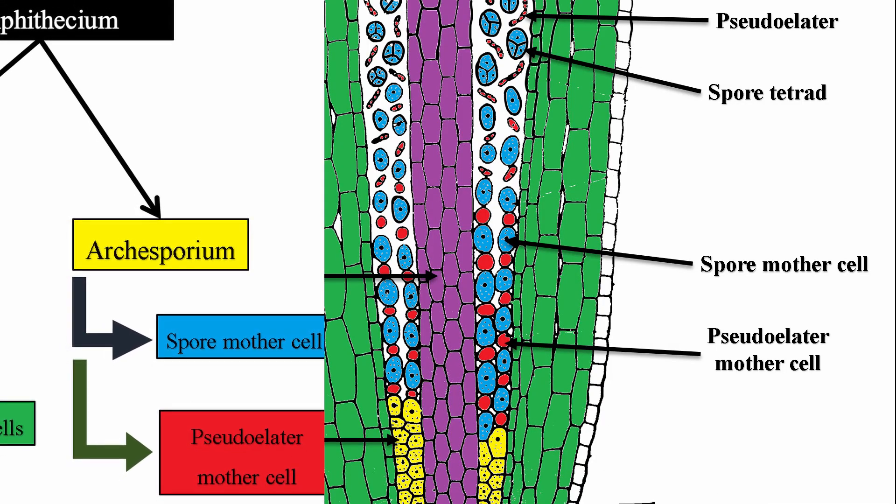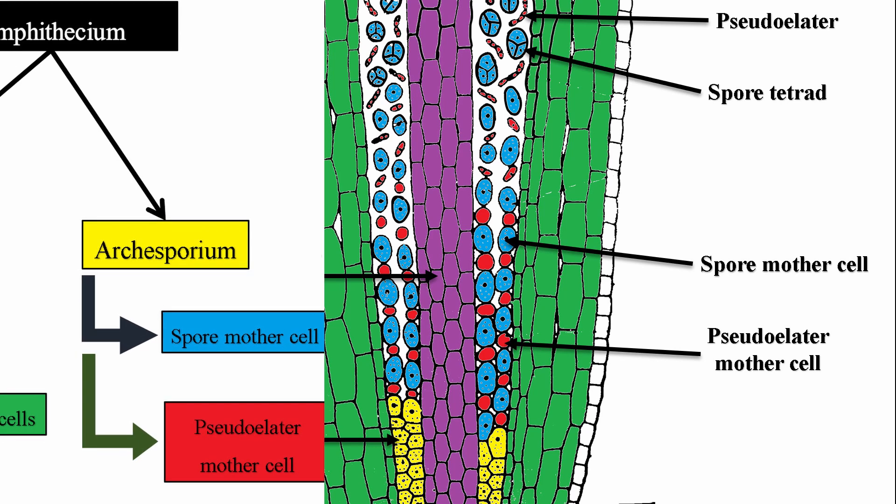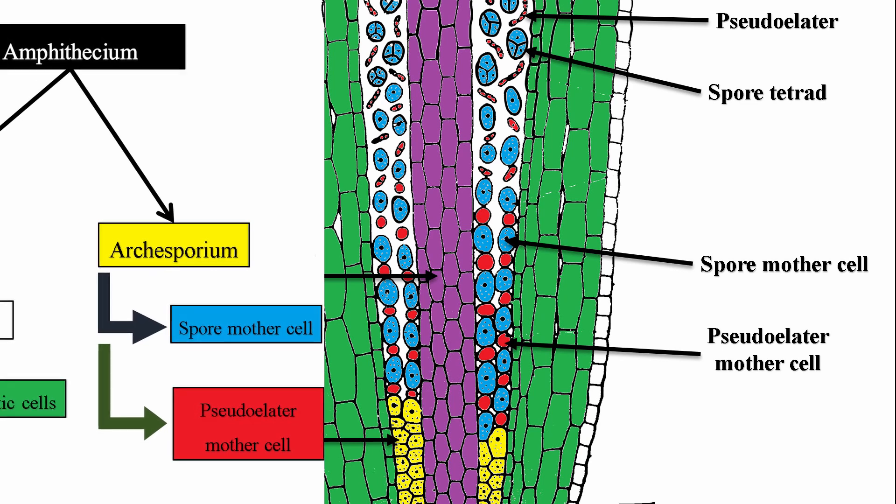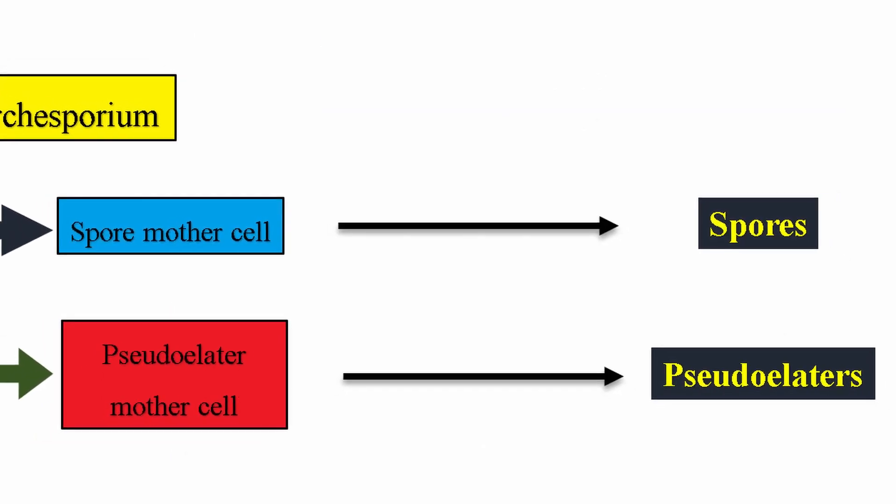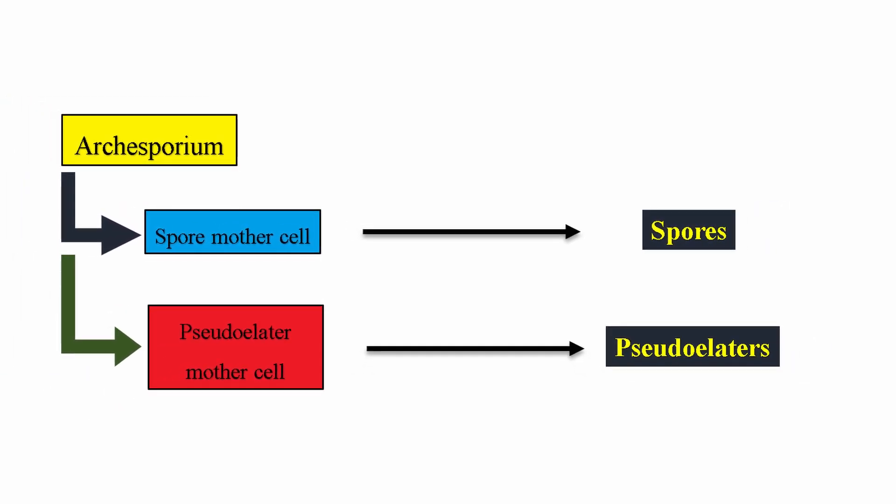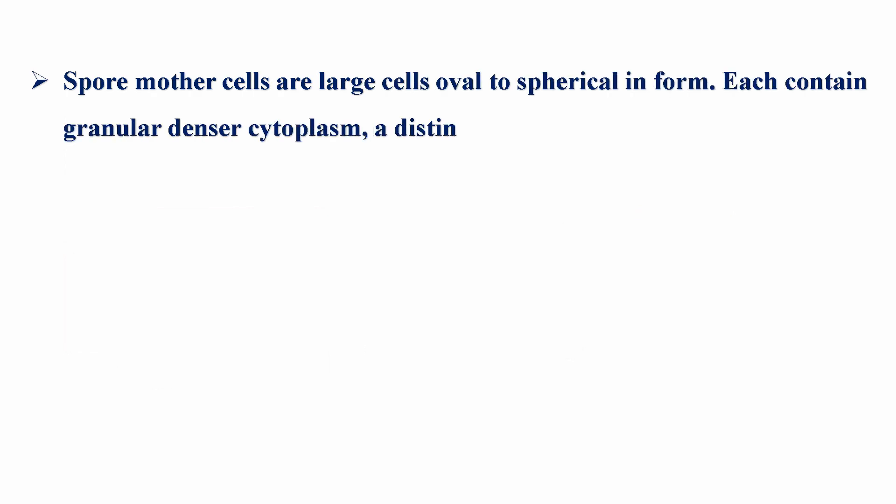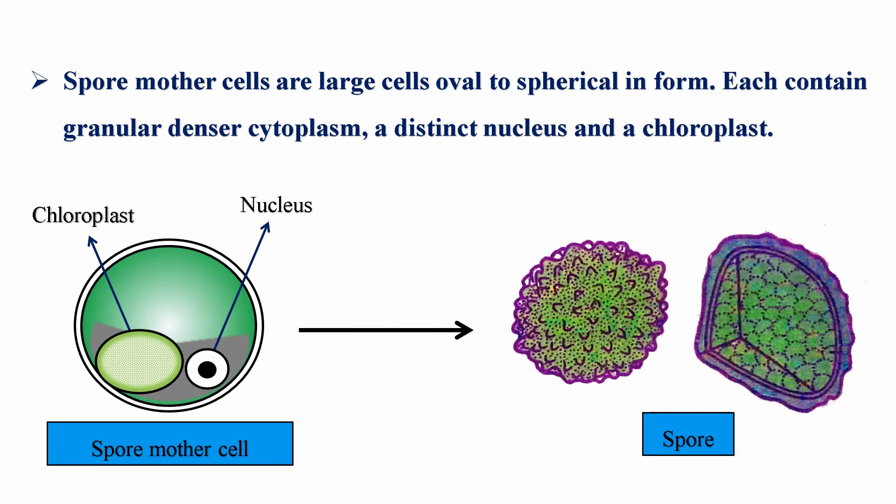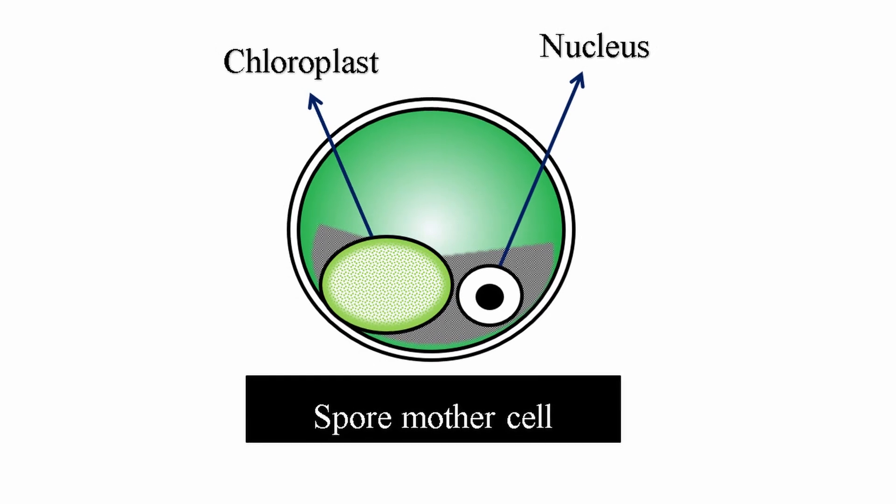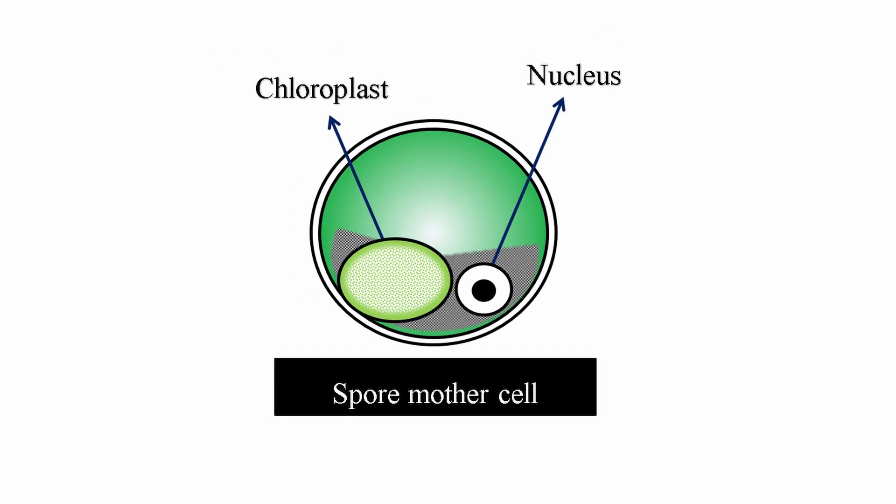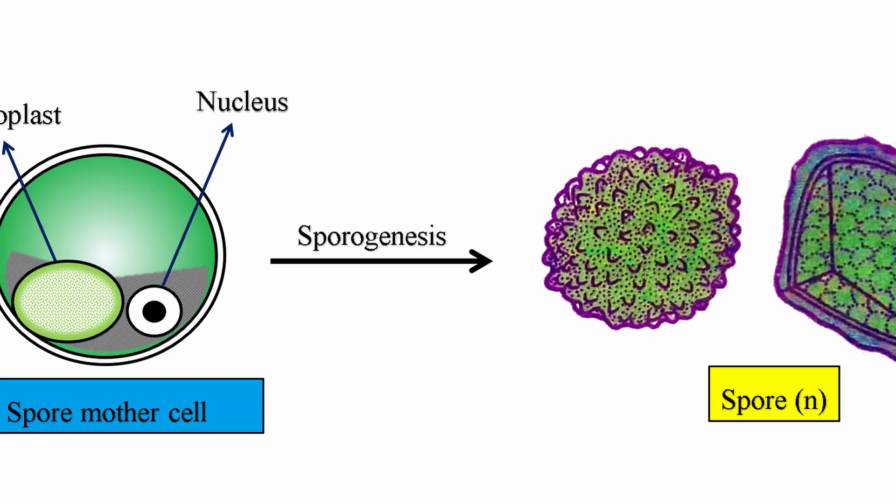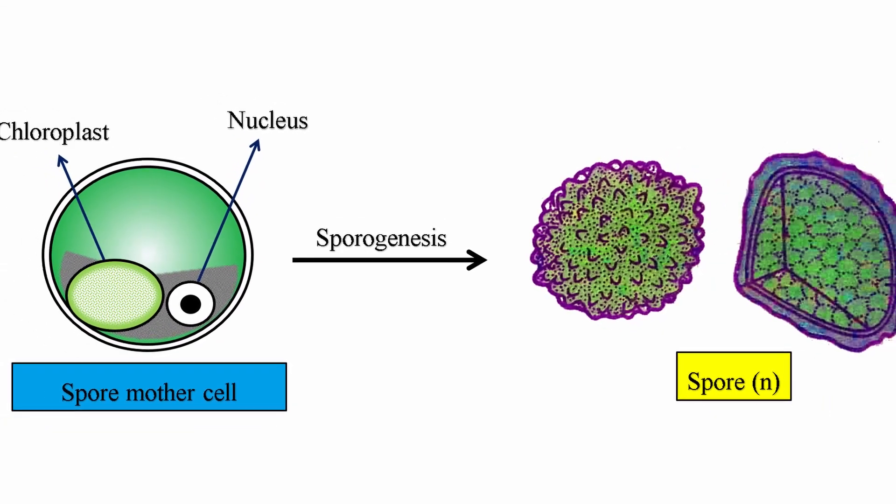The archesporium or simply the sporogenous tissue differentiates into two kinds of cells, which are spore mother cells and pseudo-elater mother cells. Spore mother cells develop into spores whereas the pseudo-elater mother cells develop into pseudo-elaters. Spore mother cells are large cells which may be oval to spherical in form, each of which contain a granular denser cytoplasm, a distinct nucleus and a chloroplast. Each of these spore mother cells undergoes meiosis to form the haploid spores in the process known as sporogenesis.